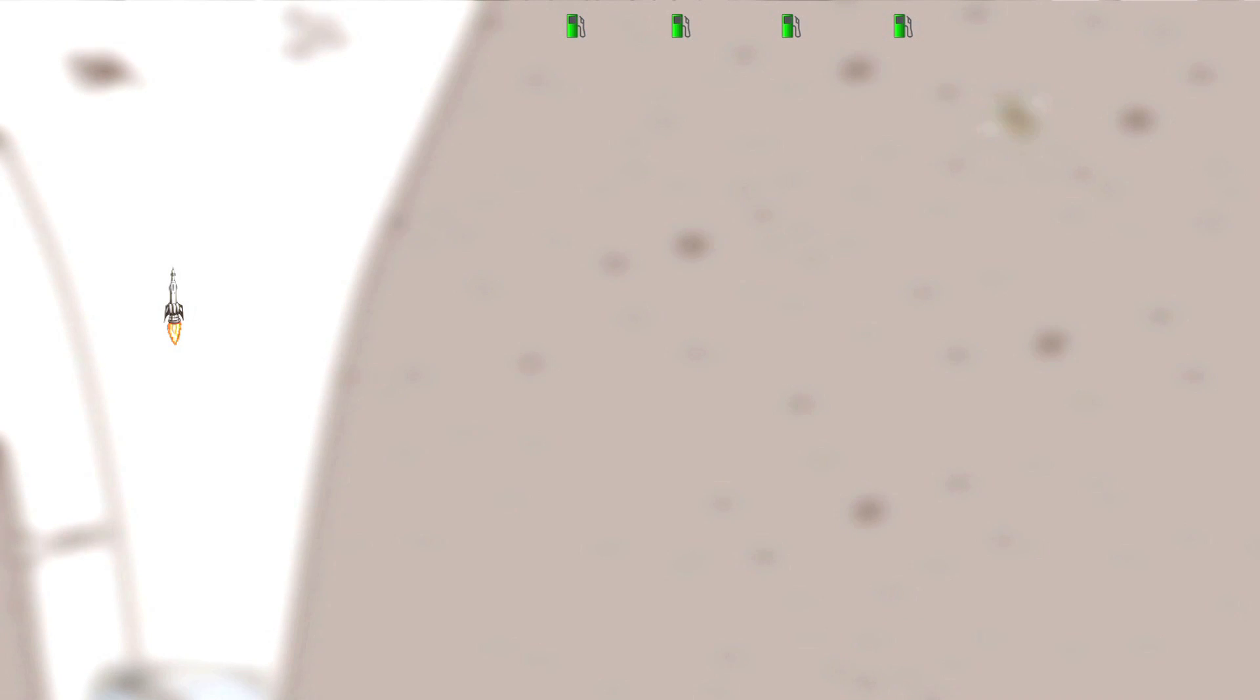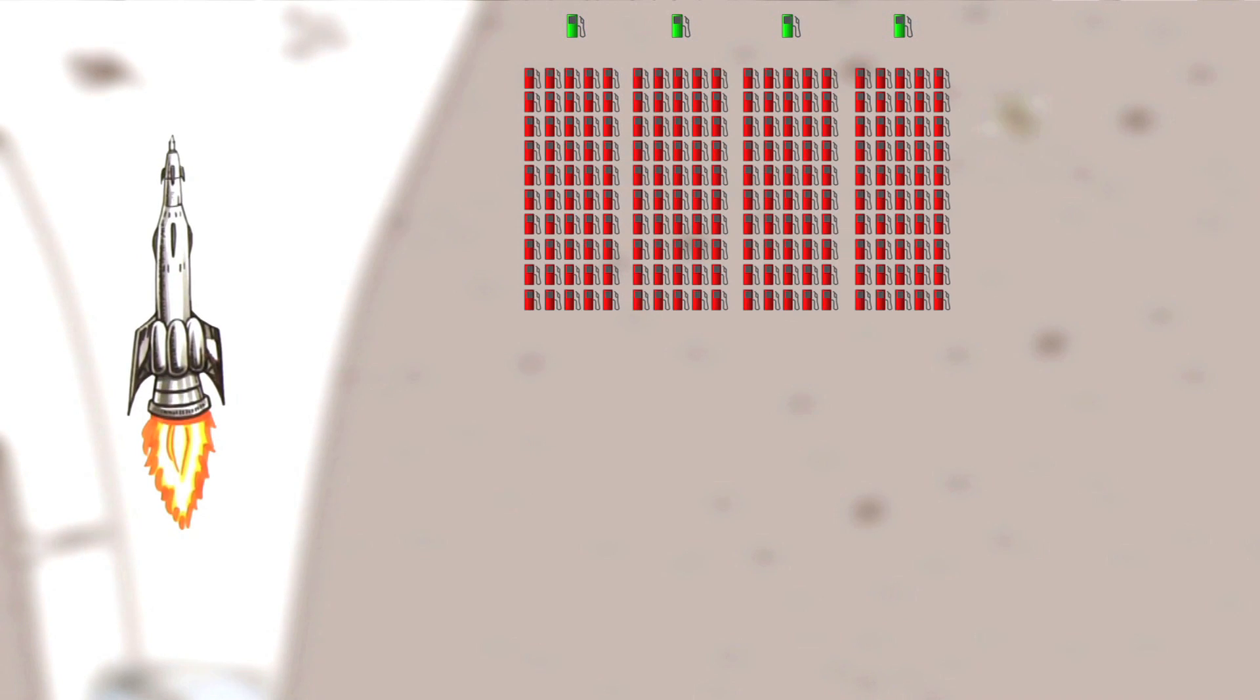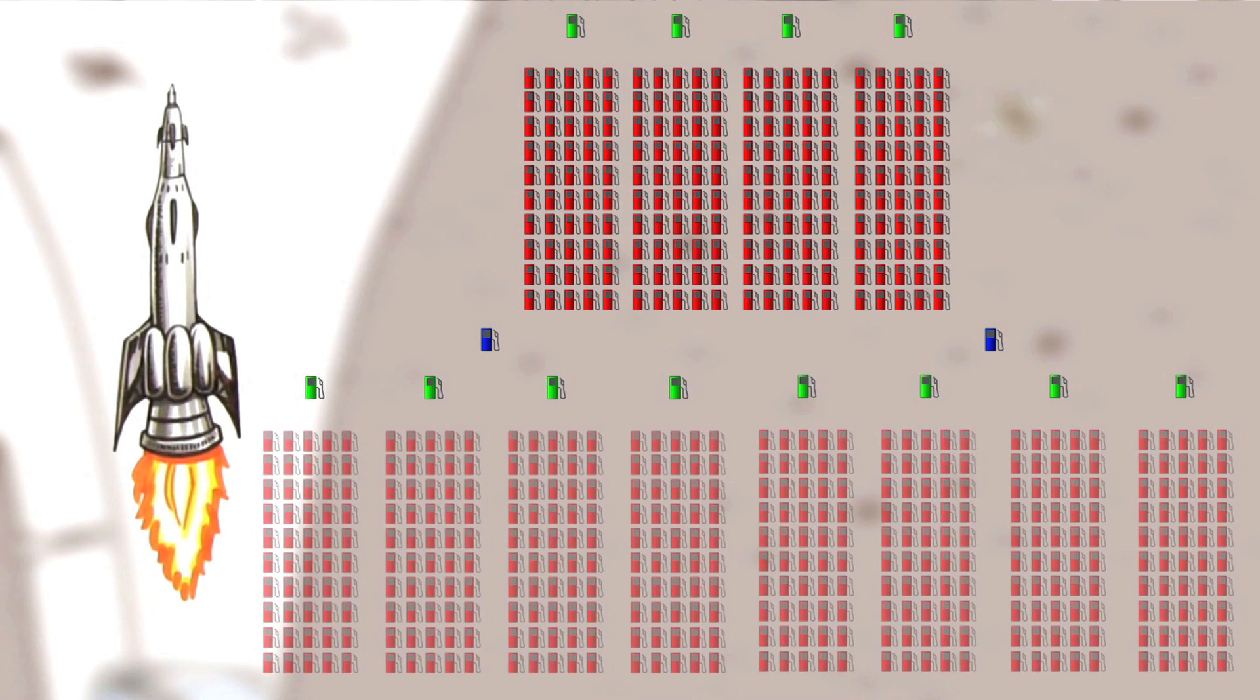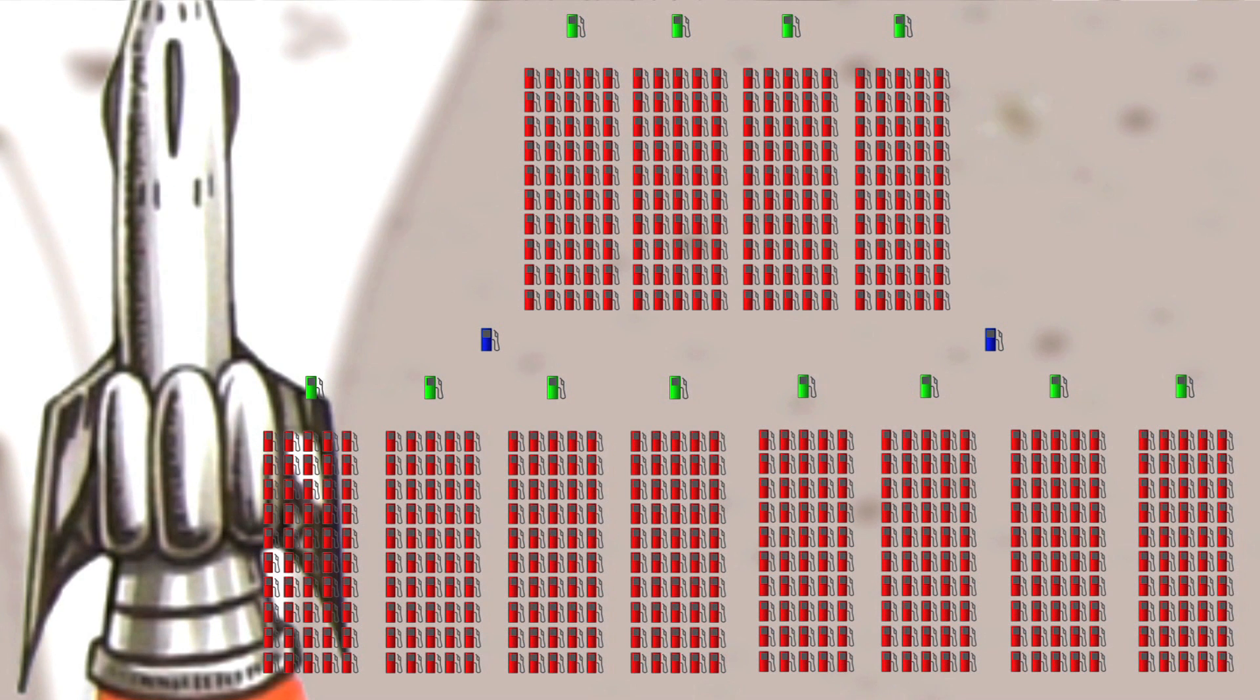But those four kilos to GEO each need 50 kilos to get into LEO first. And those two to everywhere else each need four, which each need 50. This exponential nature of the rocket equation has us stuck hugging our planet.